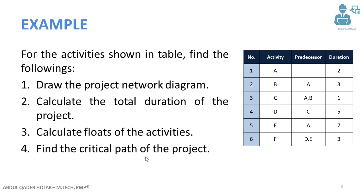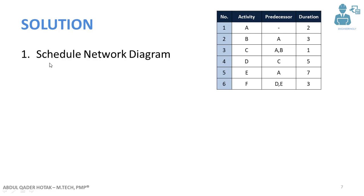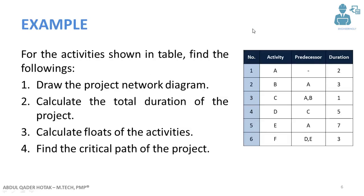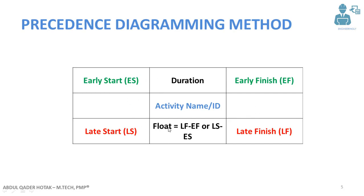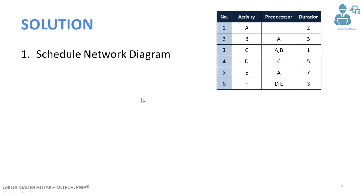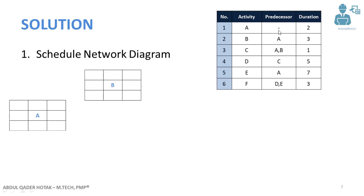Let's go step by step. For the network diagram, I have left the table visible so you can see and understand what I'm doing. First we have activity A — we will draw each activity with its details in the node. Activity A has no predecessor, meaning there is no activity before it. Activity B's predecessor is activity A, so we connect these two activities. Next we come to activity C — its predecessors are A and B, so we connect it to both.